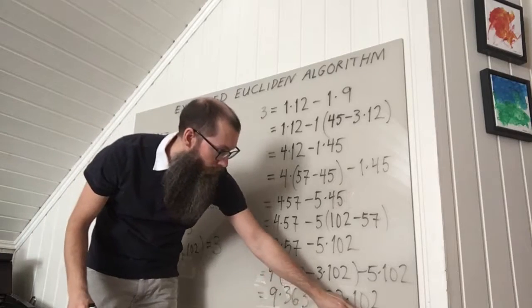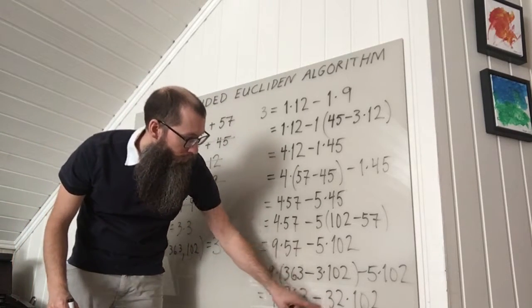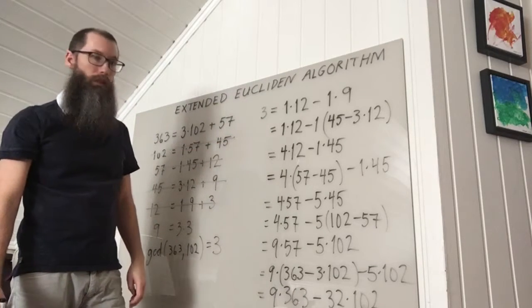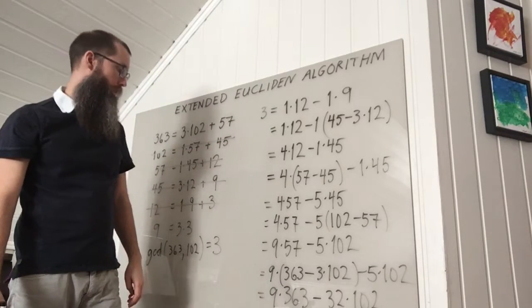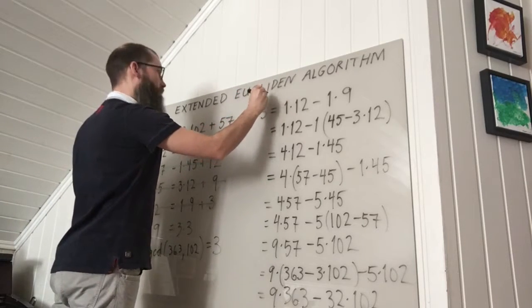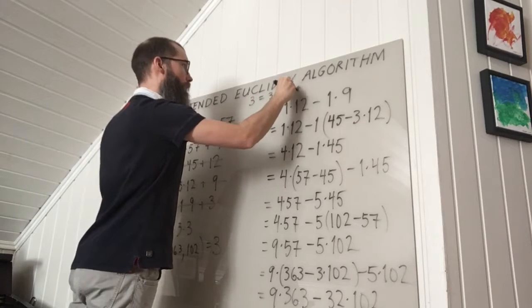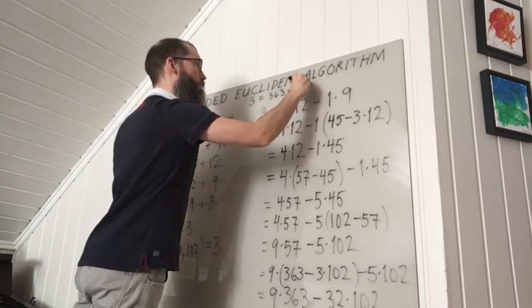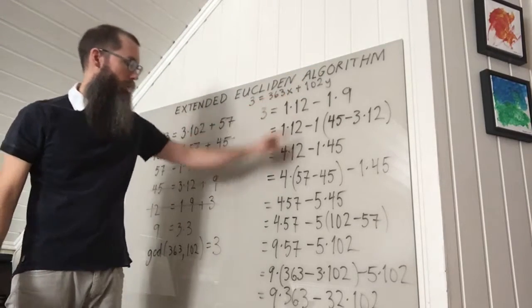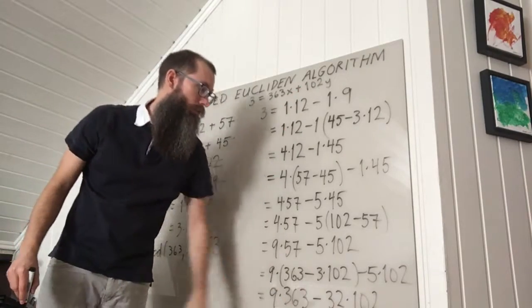So this means that I can write 3 as a linear combination of 363 and 102. I need 9 of these and to subtract 32 of these. And that gives me 3. So that is a solution to the equation 3 equals 363x plus 102y. Then I simply take x equal to this 9 and y equals to minus 32.